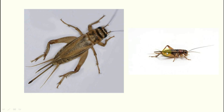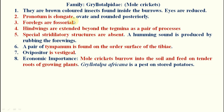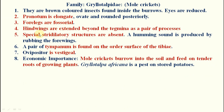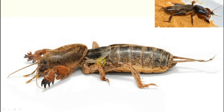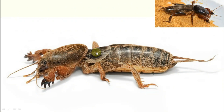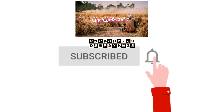Family Gryllotalpidae — example: mole crickets. The pronotum is highly enlarged. The fore legs are fossorial (digging type); the hind legs are cursorial (running type). The hind wings extend beyond the tegmina as a pair of processes. The sound-producing organ is absent. The tympanal organ is found on the surface of the tibia. The ovipositor is vestigial. Economic importance: they burrow into soil, feed on tender roots of growing plants, and are considered a household pest.